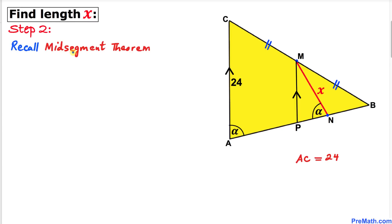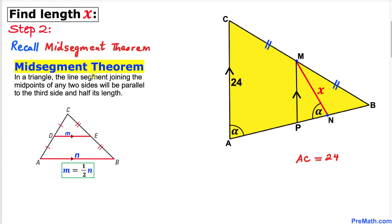Let's recall the midsegment theorem. In a triangle, the line segment joining the midpoints of any two sides will be parallel to the third side and have half its length. In our case, M is a midpoint and P is a midpoint for line segment AB.